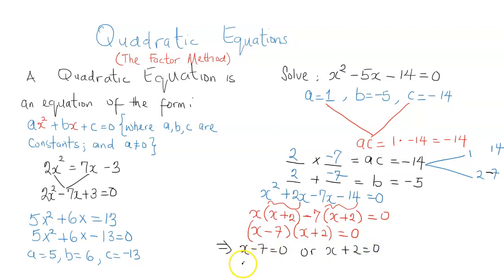So solving x minus 7 equal to zero, I'm going to get x equal to 7. And solving x plus 2 equal to zero, I'm going to get x equals negative 2. So this is the solution of the quadratic equation x squared minus 5x minus 14 equal to zero.